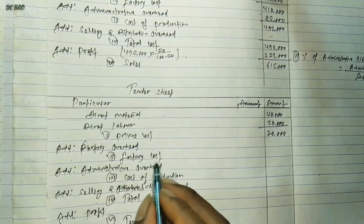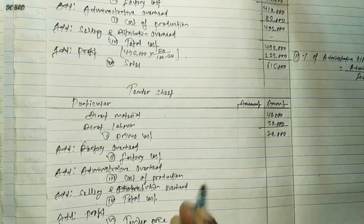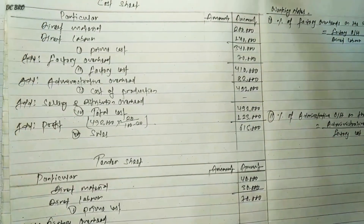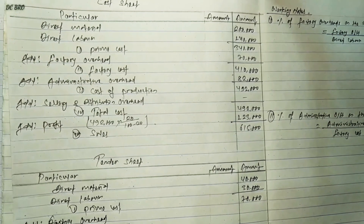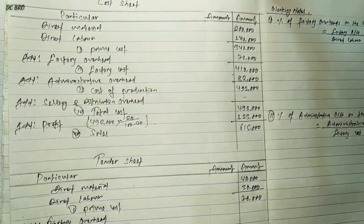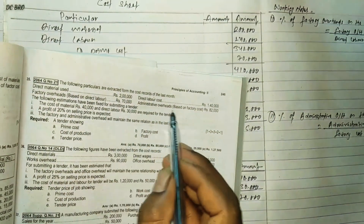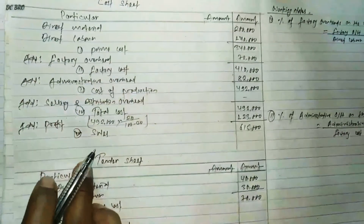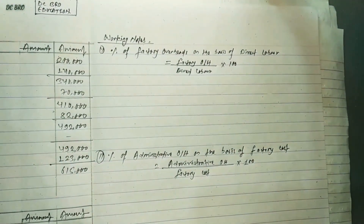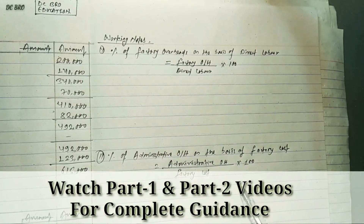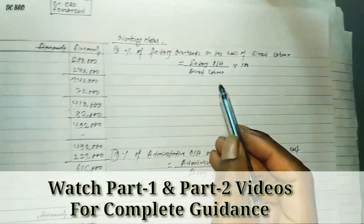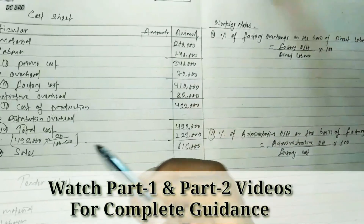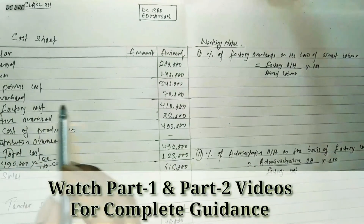We can see factory overhead, administrative overhead, and selling and distribution overhead. Factory overhead is added on the basis of direct labor; administrative overhead on the basis of factory cost. The amount of factory overhead is $30,000, and direct labor is $40,000.